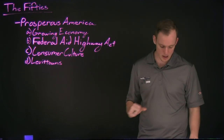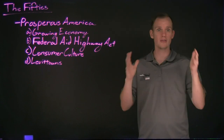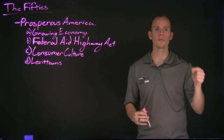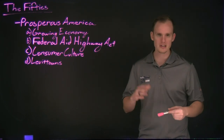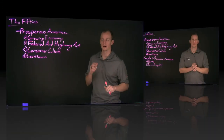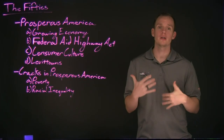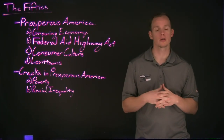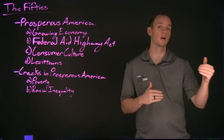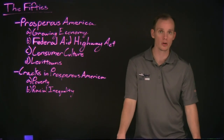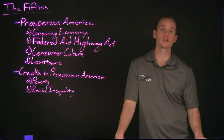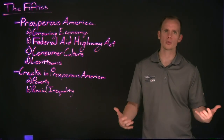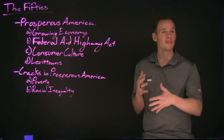However, while we do see Americans view the 1950s — even up to today — as the golden age of prosperity, there are going to be some cracks within this prosperous America. Even though America was witnessing its golden age, there will be some cracks, mainly in regards to a couple of issues. First, even though Americans were making more money and we see a growing middle class, a substantial number of Americans still fell below the poverty line — about one in five Americans, roughly 20% of the nation, were living in poverty-stricken communities.